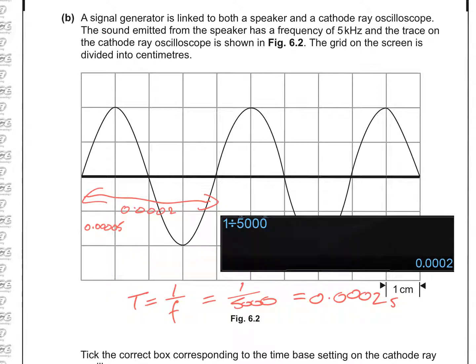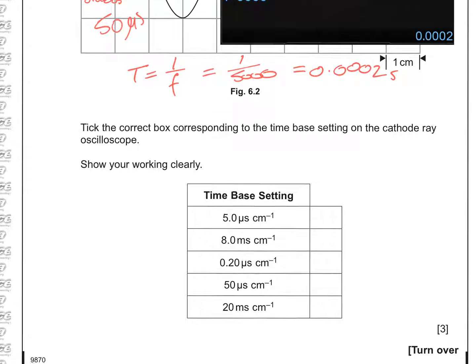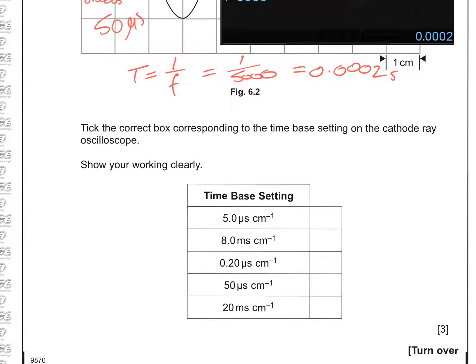That means that this is 0.0002 of a second. And if 4 squares are giving us 0.0002, then 1 square must be 0.00005. And that corresponds to 50 microseconds. So now we need to see if that corresponds to anything in the table that we've got. So do we have 50 microseconds anywhere? Yes we do.